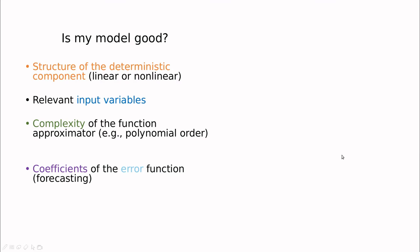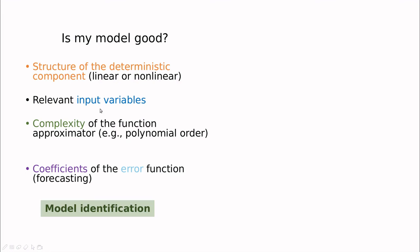The two most important questions we have to ask here are: first, is my model good? This has to do with the structure of the model — linear versus non-linear, what are the relevant input variables, the complexity of the approximator. For instance, if we are talking about polynomial regression, what's the best choice for the order? And in the case of forecasting, what are the coefficients of the error function? We're going to call all these questions model identification — here we are concerned with what's the best model that tries to produce my data.